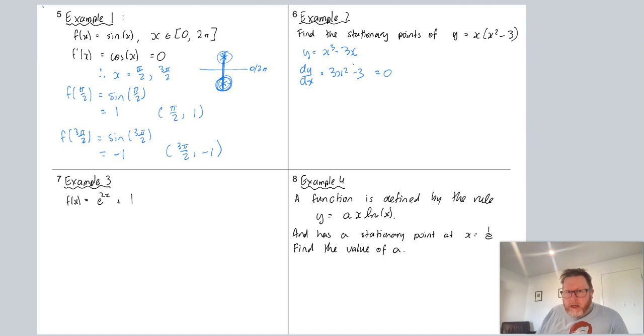Set that equal to zero for stationary points. Now we figure it out: 3x² is equal to 3, x² is equal to 1, and therefore x equals plus or minus one. So that's the x coordinates, but remember our job is not done until we work out the y coordinate as well. Back to our original function, substitute each of those numbers in.